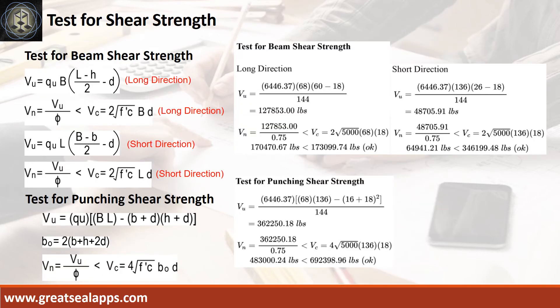The maximum beam shear force at long direction is 127,853 pounds; the nominal force is 170,470.67 pounds, less than 173,099.74 pounds. The maximum beam shear force at short direction is 48,705.91 pounds; the nominal force is 64,941.21 pounds, less than 346,199.48 pounds. The maximum punching shear force is 362,250.18 pounds; the nominal force is 483,024 pounds, less than 692,398.96 pounds.